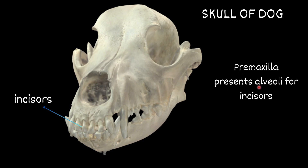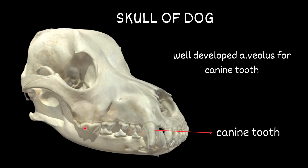The premaxilla presents alveoli for the incisors. There is a well-developed alveolus for the canine tooth, which is a very important feature of the dog skull.